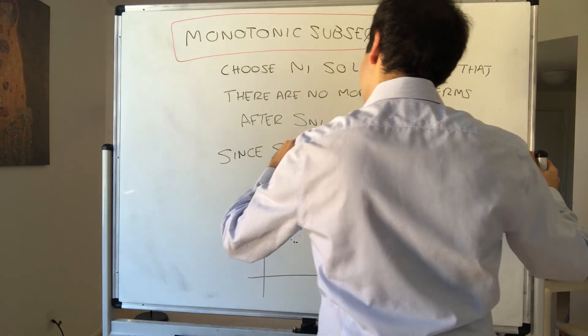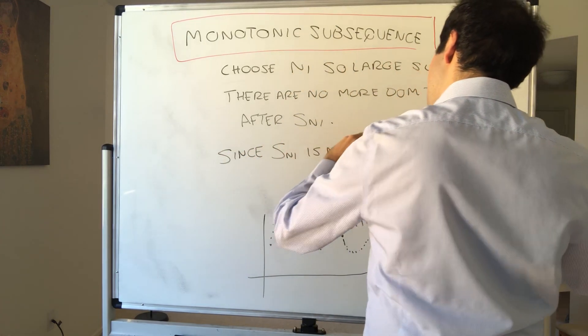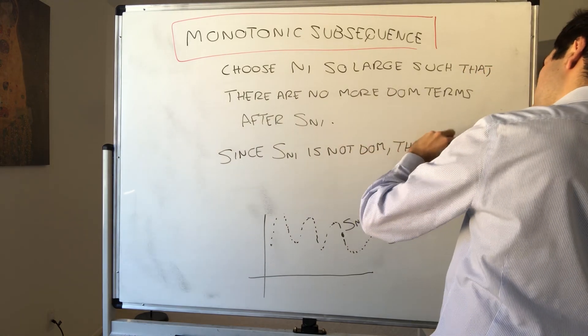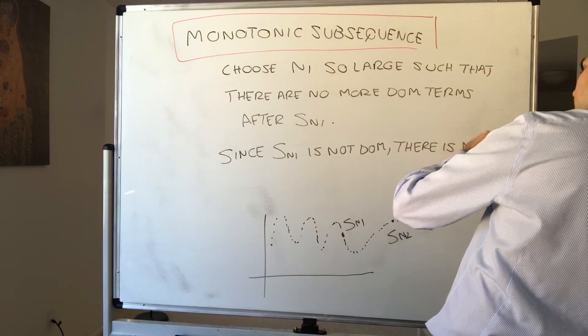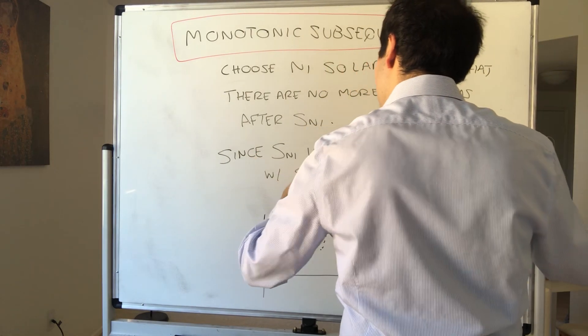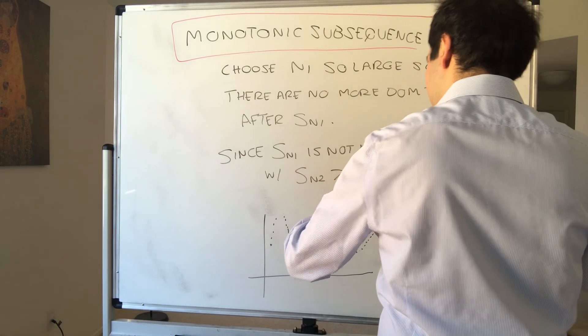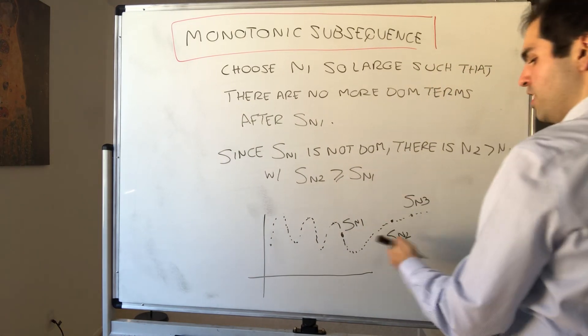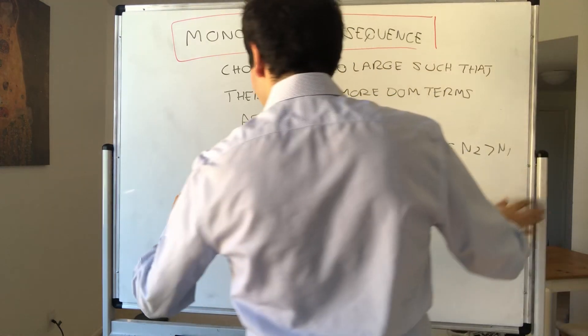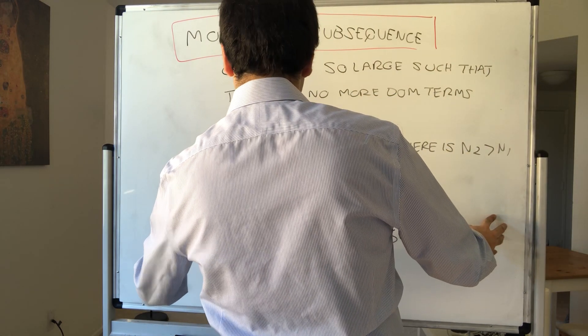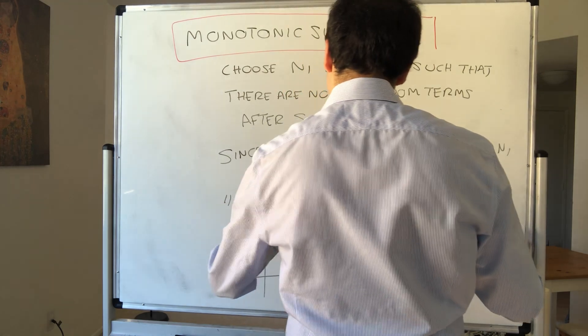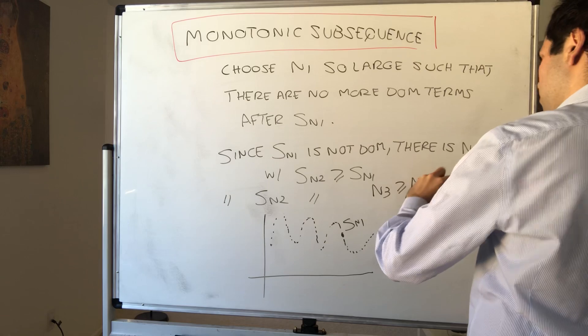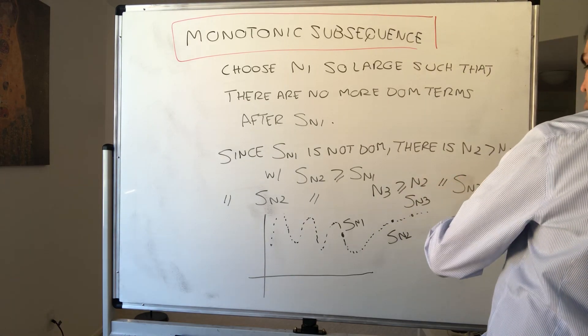Okay, we can do that because there are only finitely many terms. Now, why does that solve our problem? But look, because, well, Sn1 is not dominant anymore, which means there's a term Sn2 that's greater or equal to Sn1. So since Sn1 is not dominant, there is N2 bigger than N1 with Sn2 greater than Sn1.